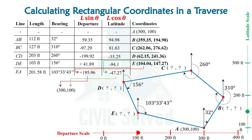If you recall, that is the coordinate of point A. It means we started at point A and we came back to point A. When we move the position of the red and green dots on this latitude and departure scale, we will be having the same position where we had started.